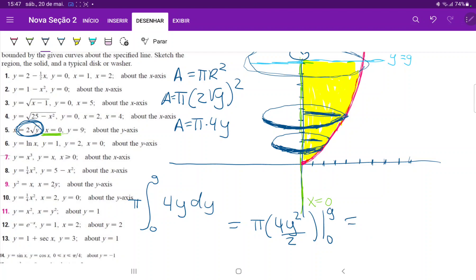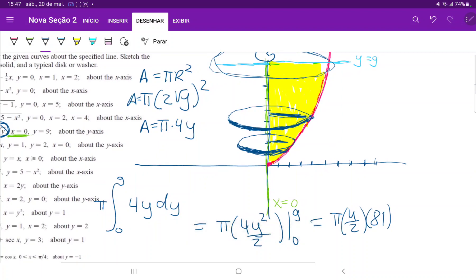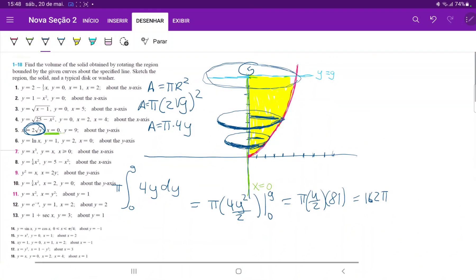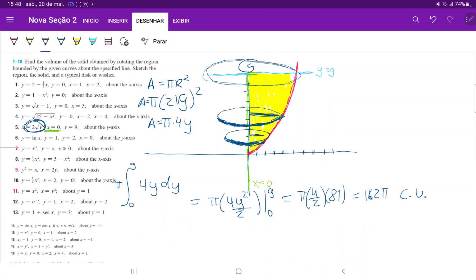So this is equal to pi times 4y squared over 2, evaluated from 0 to 9, which is just equal to pi times 4 over 2 times 81. Which is equal to 81 times 2, right? So 162 pi. And we can say, because they don't give us units, we can just say that those are just generic cubic units. So, yeah. That is our integral.